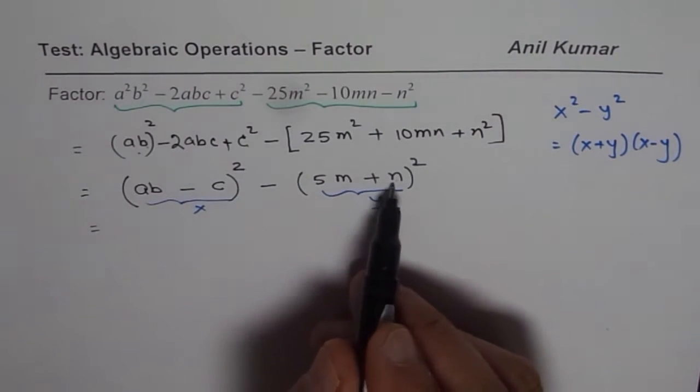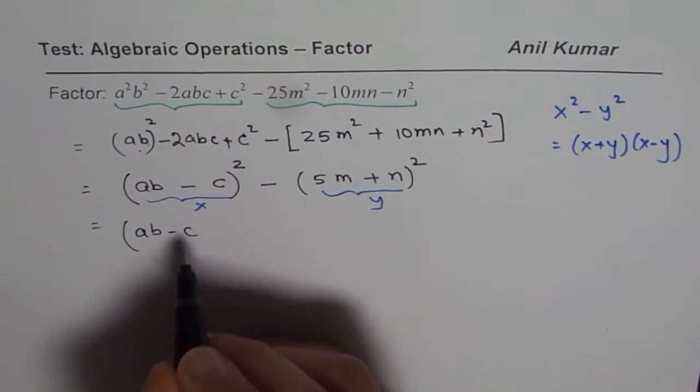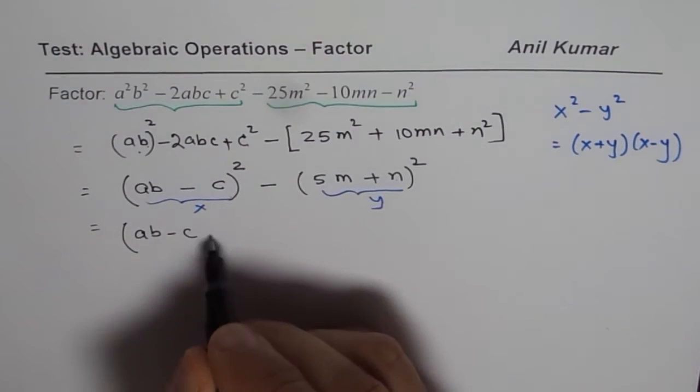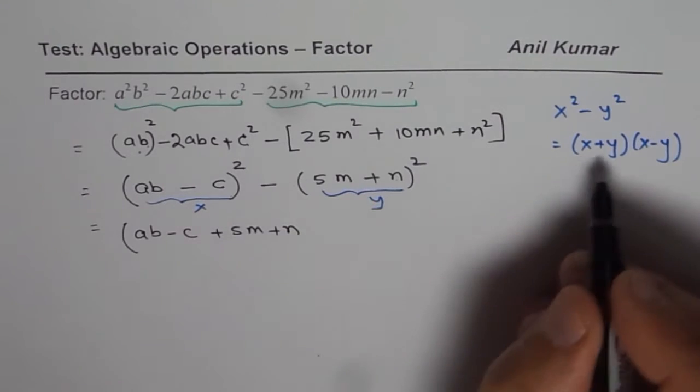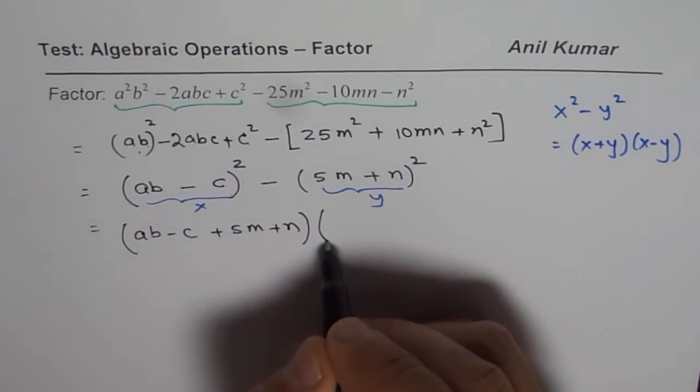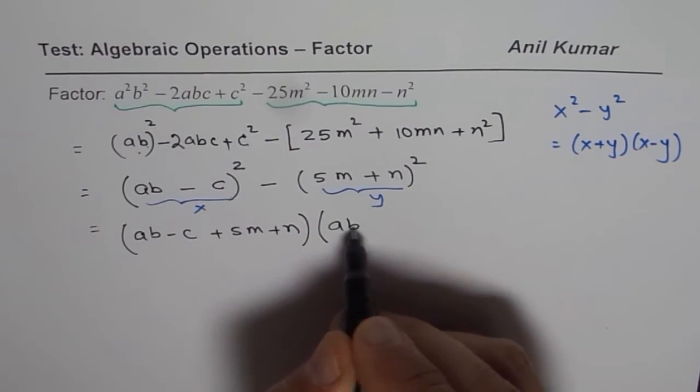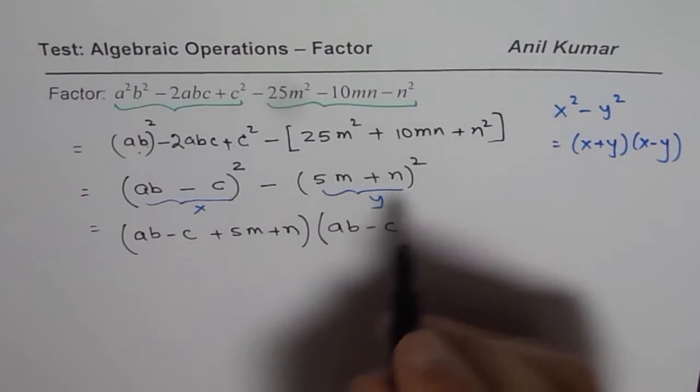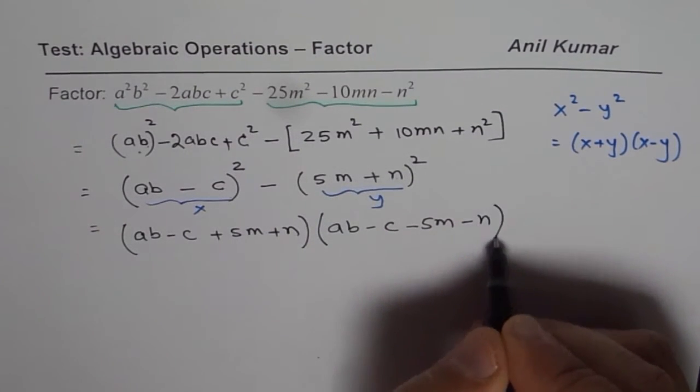So x plus y when I say, I will write this as ab - c. This is my x plus y, that means plus (5m + n), that is x plus y. We have got the first term and the next term will be x minus y, that is ab - c minus of this term will be -5m minus of that will be -n.